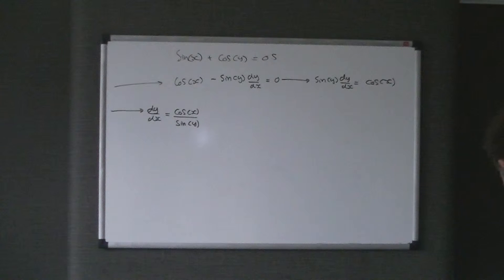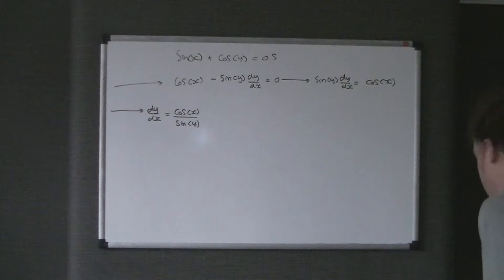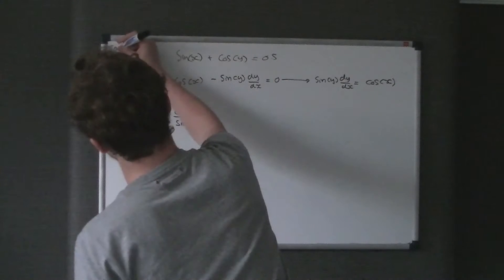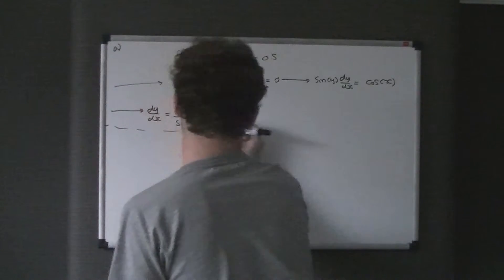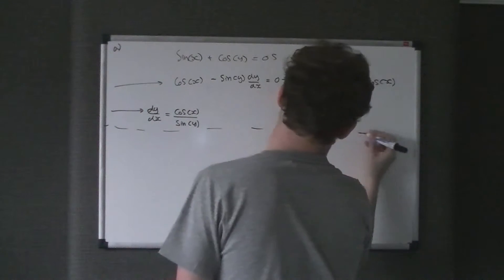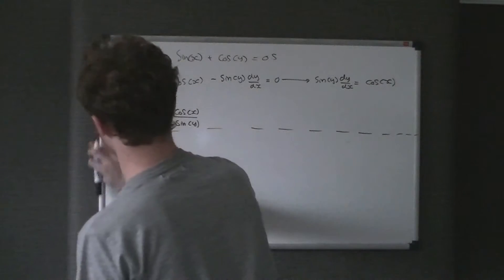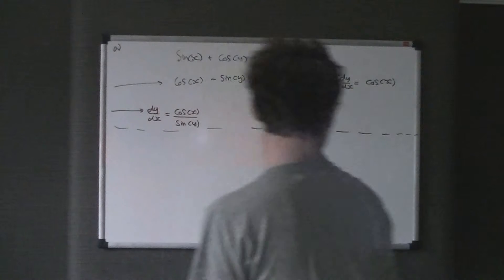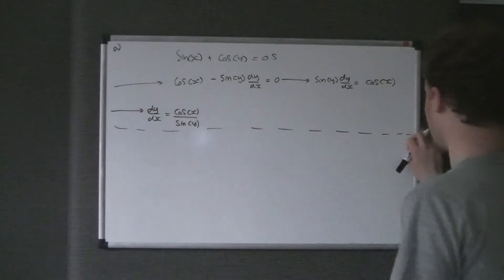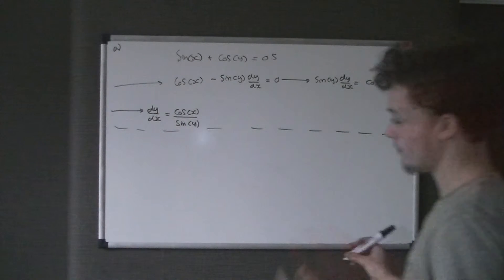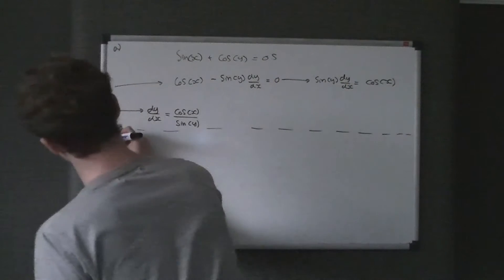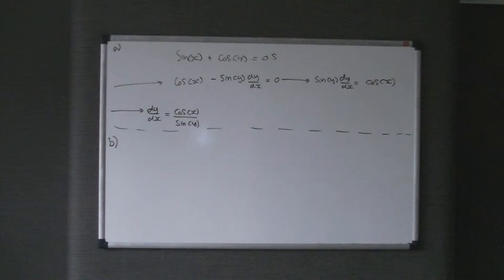Dividing both sides by sine y, we get dy/dx equals cos x over sine y. You have to leave it as that because x and y are presumed to be different — we can't just write tan x or tan y, so that's a key thing to watch out for. That's part A, worth only two marks. It's a very straightforward question, but you can see why one or two might go wrong with it. It's quite a nice start to question five.